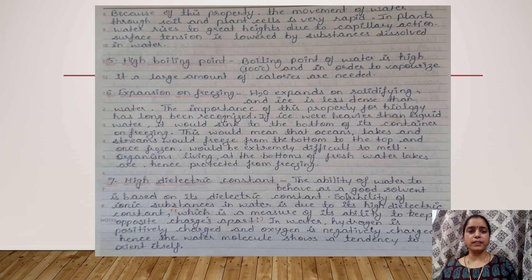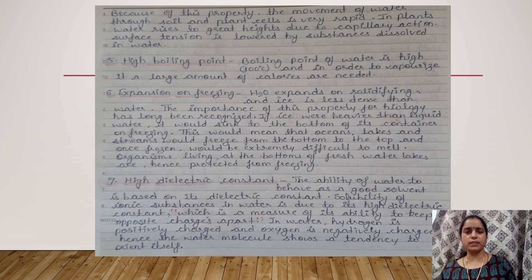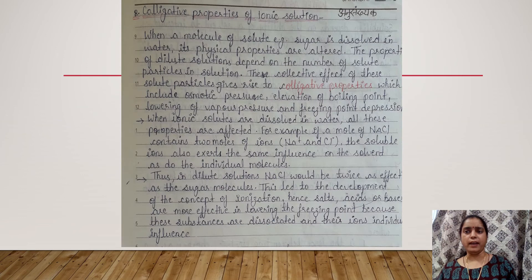The next physical property is high dielectric constant. The ability of water to behave as a good solvent is based on its dielectric constant, which is very high — that is 80. The dielectric constant is the ability of a solvent to keep two opposite charges apart. In water, hydrogen is positively charged and oxygen is negatively charged, so water molecules orient themselves to surround oppositely charged ions, a process known as hydration of ions, increasing the distance between opposite charges.